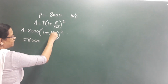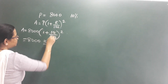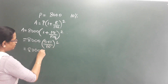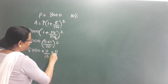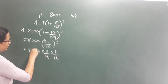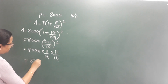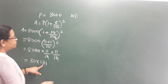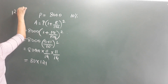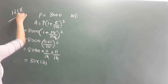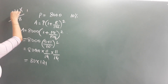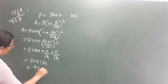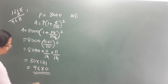So Amount equals 8,000 into 1 plus 10 by 100, raised to 2. That is 8,000 into 11 by 10 into 11 by 10, 2 times. Calculating this: 121 into 8 gives us 9,680 rupees after 2 years.